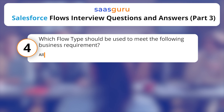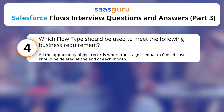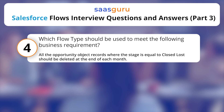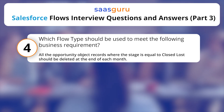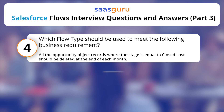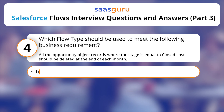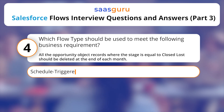Which Flow type should be used to meet the following business requirement? All the opportunity object records where the stage is equal to closed lost should be deleted at the end of each month. The answer is Schedule Triggered Flow.